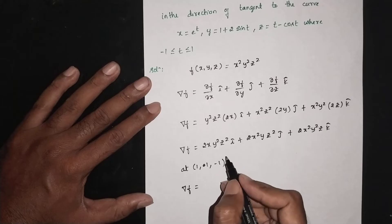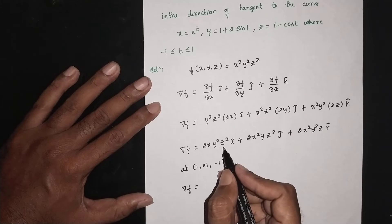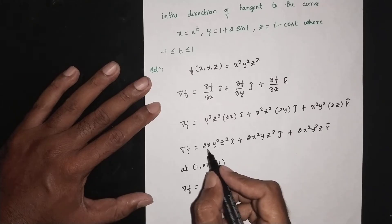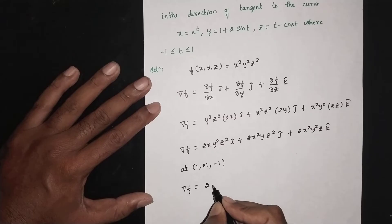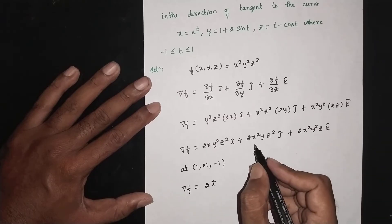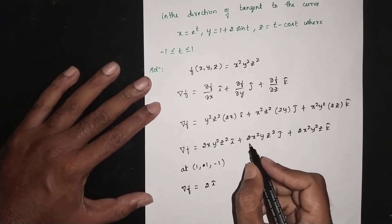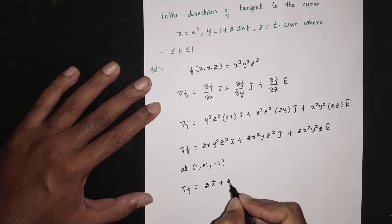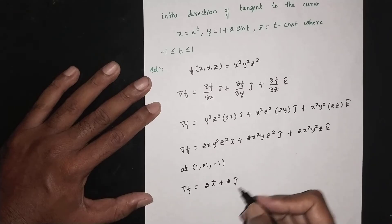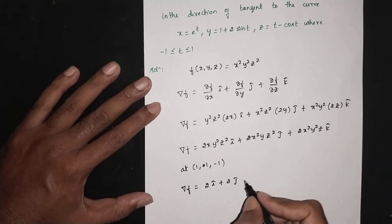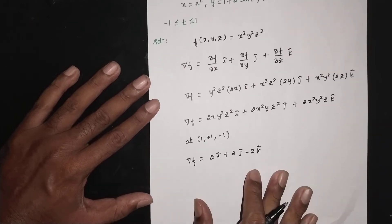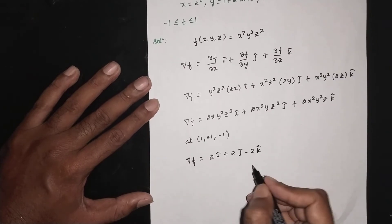At the point (1, 1, -1), substituting values into the gradient: ∇f = 2i + 2j - 2k.